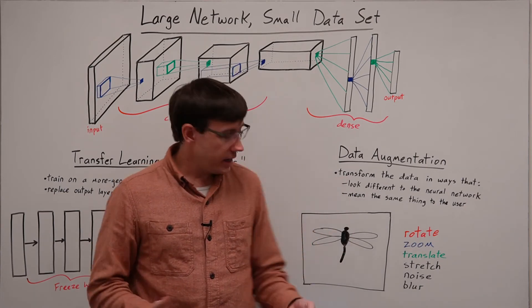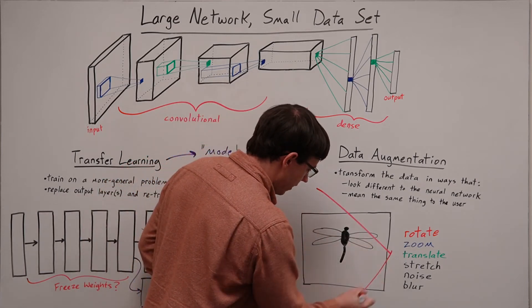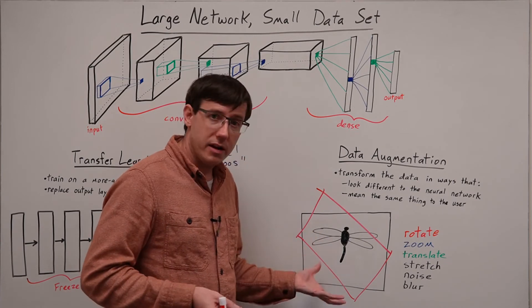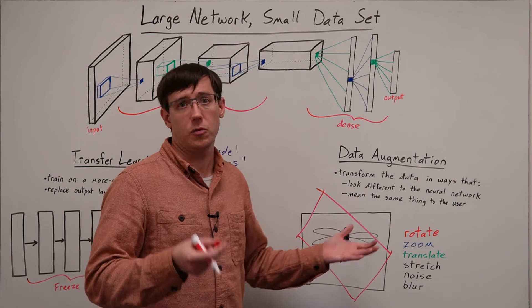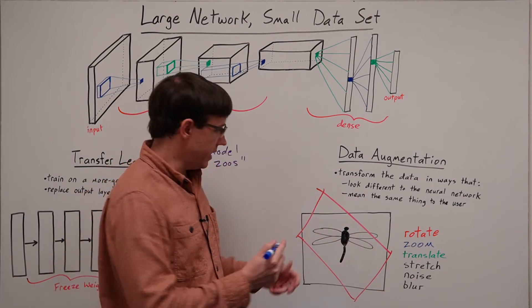For example, if we're classifying an image of an insect, we could rotate the image, and a human looking at the rotated image would still be able to identify what sort of insect is pictured. Likewise, we could zoom in on the image.